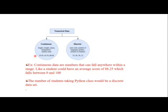Numerical data can be divided into two things: one is called continuous and one is called discrete. Continuous examples include height, weight, salary of an employee, and temperature. Discrete examples include number of languages spoken and number of students.